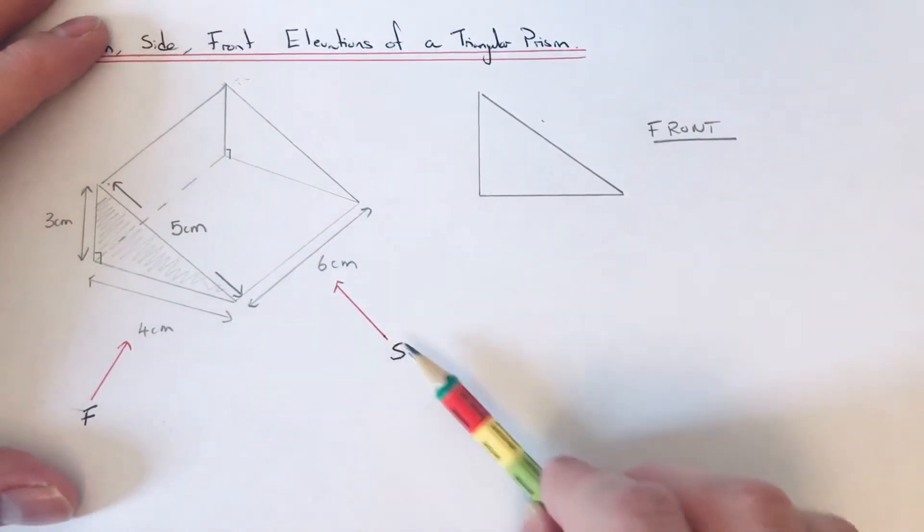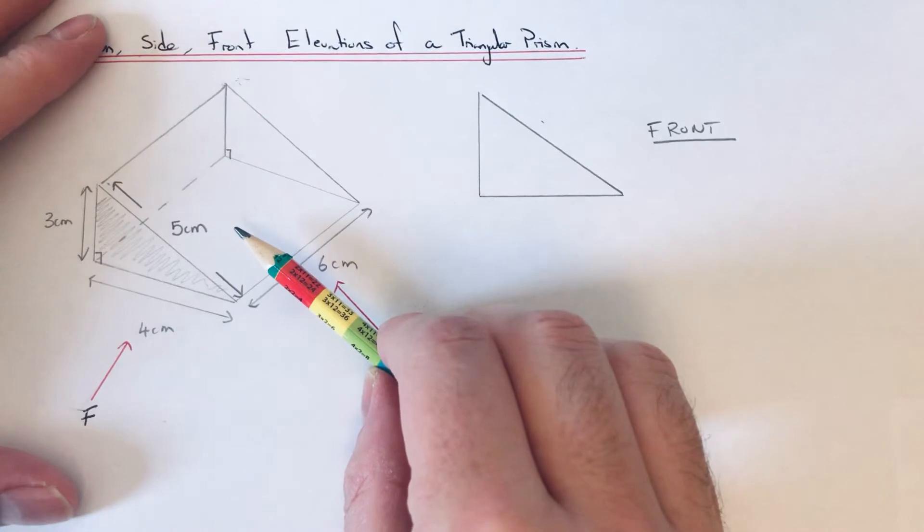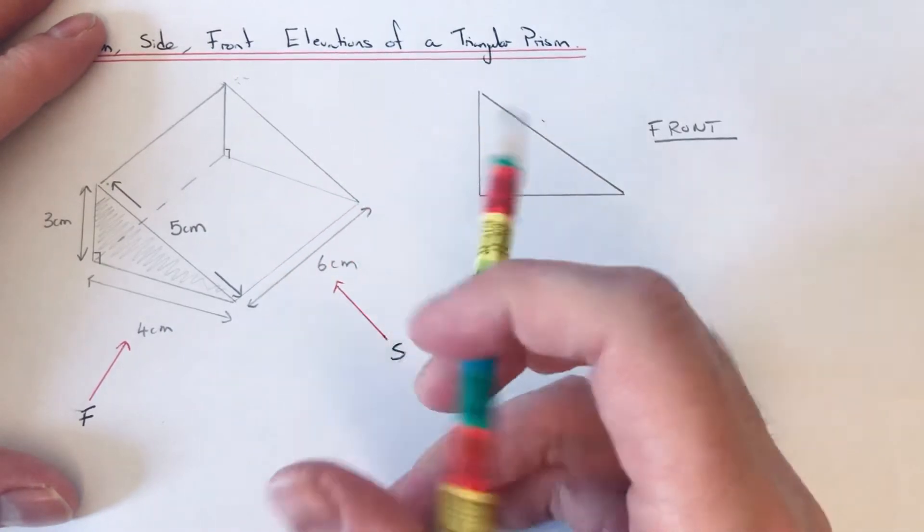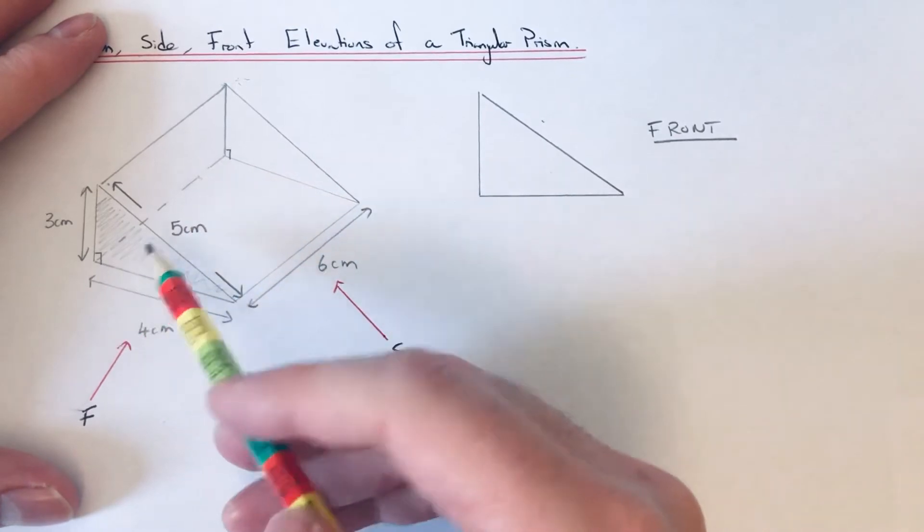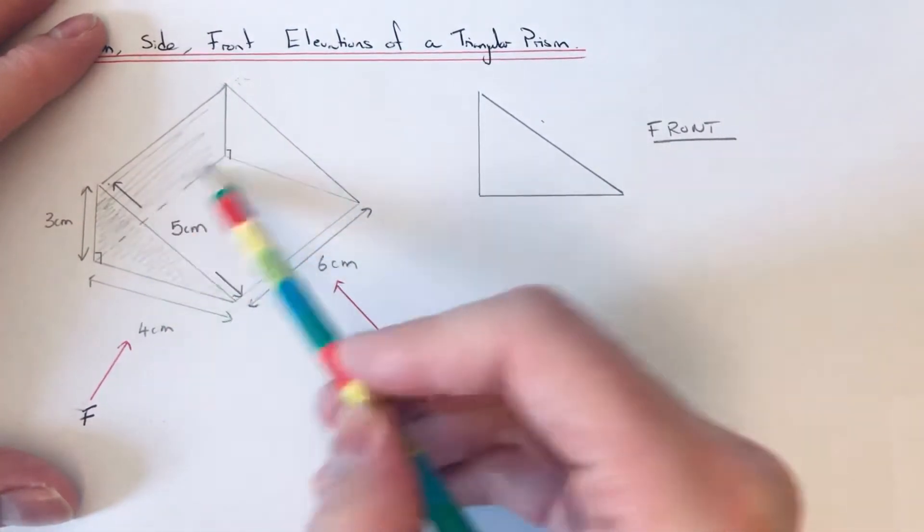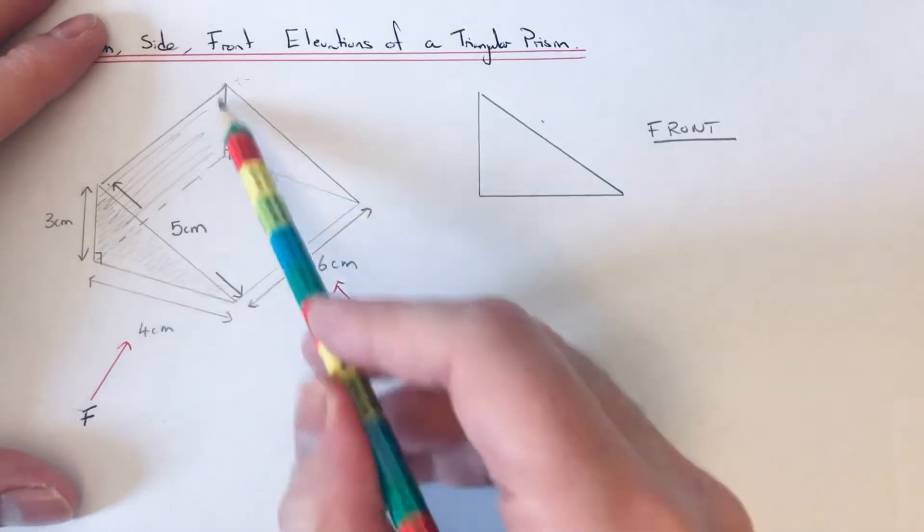This is what you see if you're looking in this direction here. A good little trick on this is to just look at the back of the prism. If you look at the back of the prism, it's a three by six rectangle.